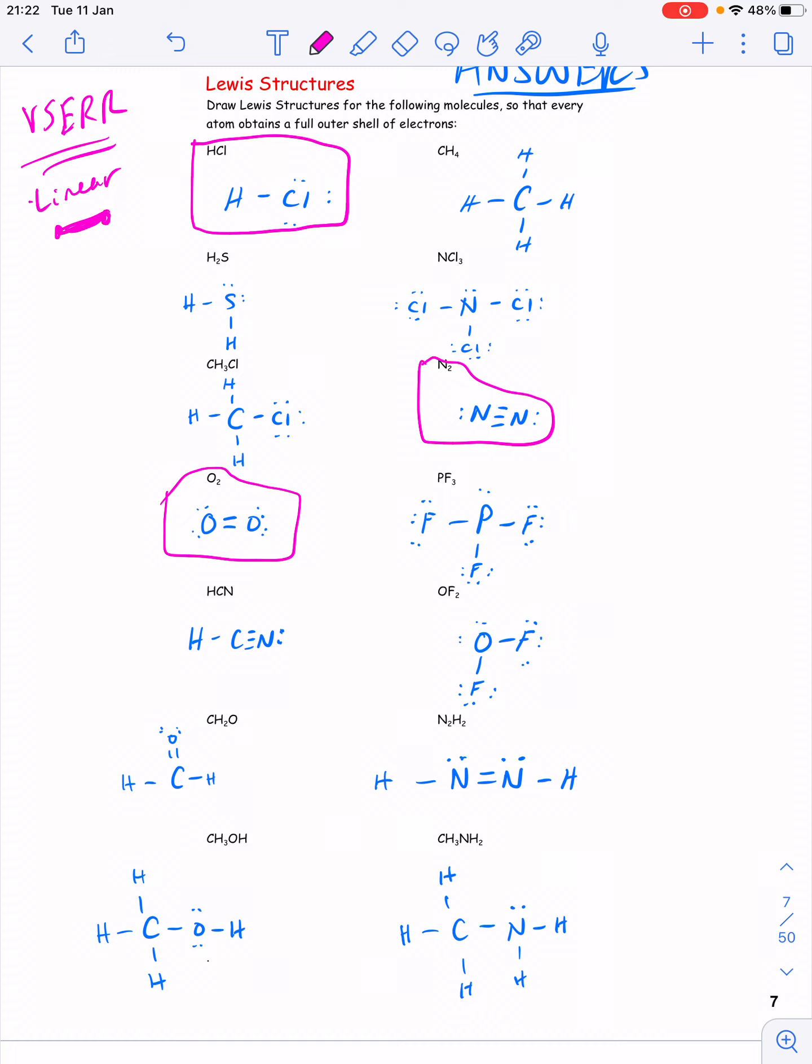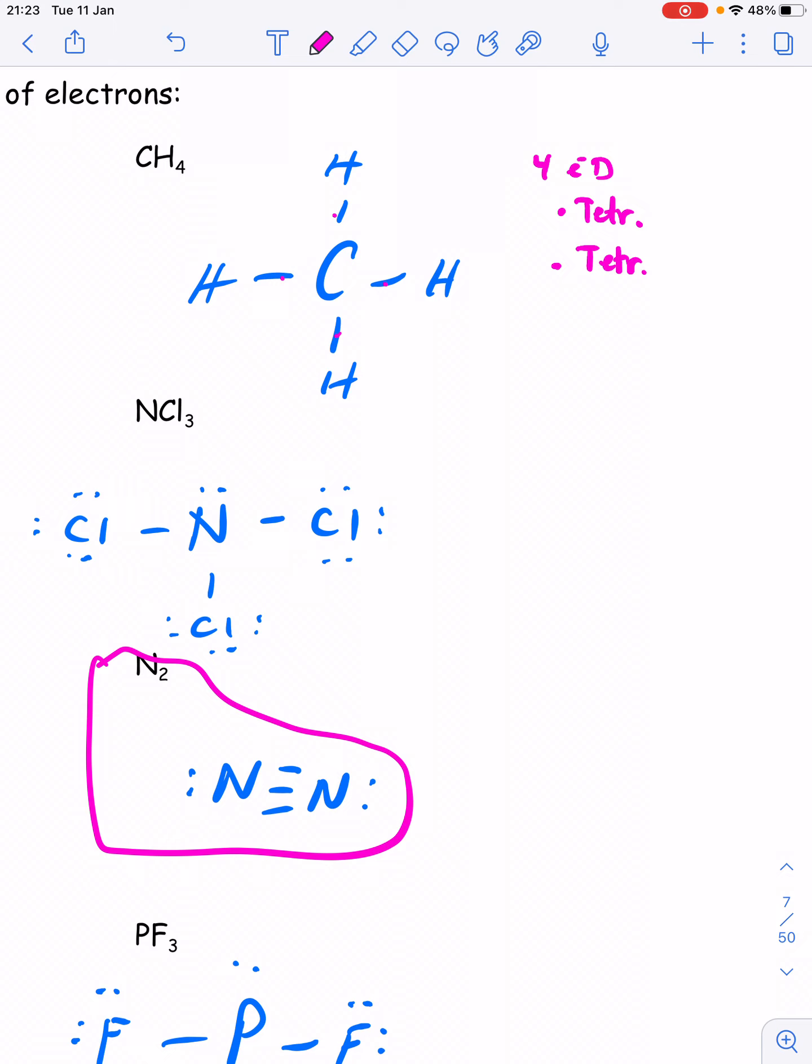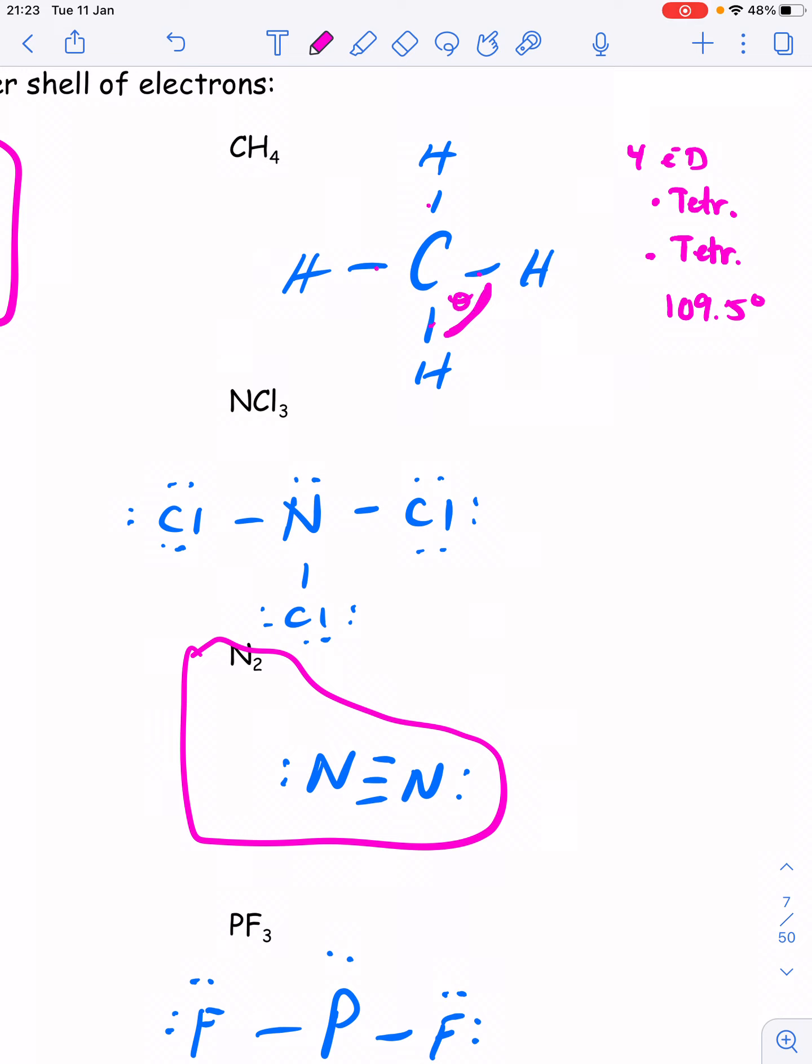But the rest of these, we can apply the VSEPR theory to identify electron domain geometry, molecular geometry, and bond angles. So if we look at methane, I can do a quick count that there's one, two, three, four electron domains around the carbon, which is going to give us a tetrahedral electron domain geometry. I can see that all of those domains are bonded to atoms, which means the molecular geometry is also called tetrahedral, and the bond angle for tetrahedral shapes is 109.5. So that would be the angle between the H, the carbon, and the H. So they call it this H to C to H bond angle.